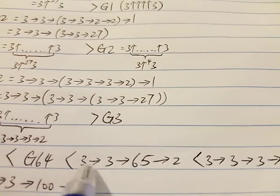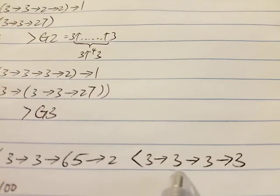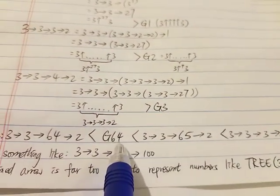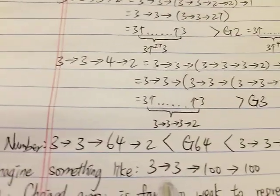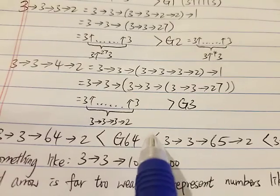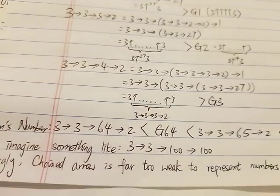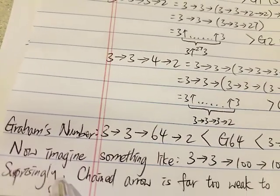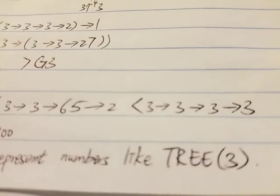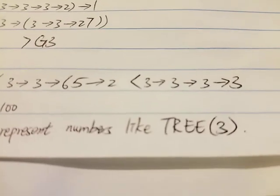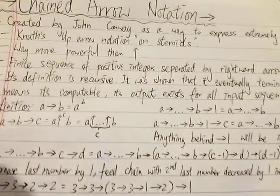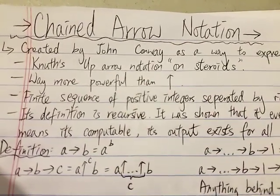This number bigger than G64 is on the other hand smaller than 3→3→3→3 — just four 3s. That thing is way bigger than Graham's number. And can you imagine something like 3→3→100→100? That would be way, way beyond Graham's number. But surprisingly, even the chain arrow notation is far too weak to represent numbers like TREE(3). So TREE(3) is way too big for even chain arrow notation. And there we have it — that's chain arrow notation. Thanks for watching, and have a nice day!